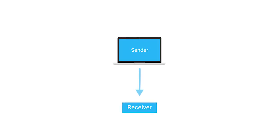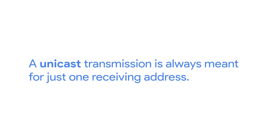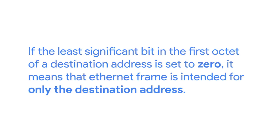So far, we've discussed ways for one device to transmit data to one other device. This is what's known as unicast. A unicast transmission is always meant for just one receiving address. At the Ethernet level, this is done by looking at a special bit in the destination MAC address. If the least significant bit in the first octet of a destination address is set to zero, it means that Ethernet frame is intended for only the destination address.